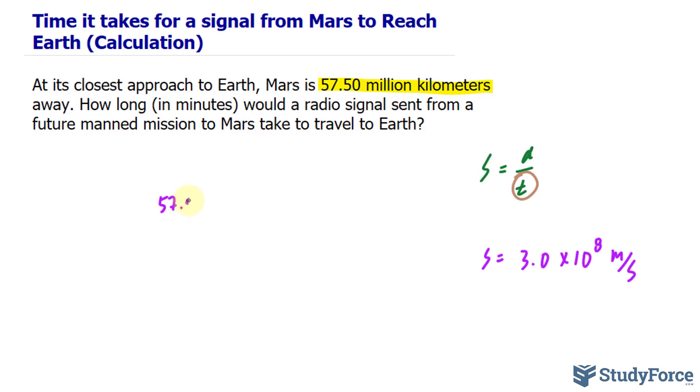We have 57.50, and this is million kilometers. So we'll multiply this by 1 million. 57.50 times 1 million is the value in kilometers. And I'll convert this value into meters. The conversion factor to go from kilometers to meters is that for every 1,000 meters, you get 1 kilometer. Multiplying these two out, this value and that fraction, the kilometers unit will cancel out.